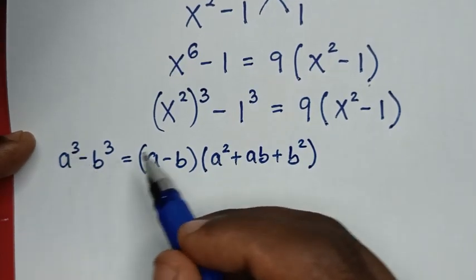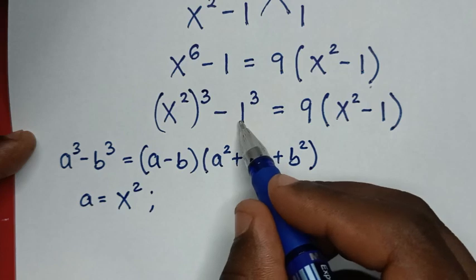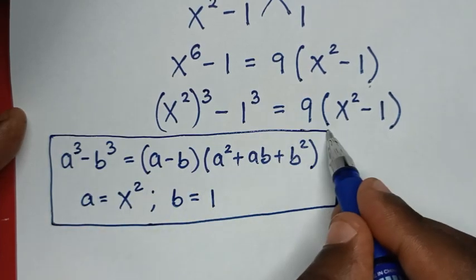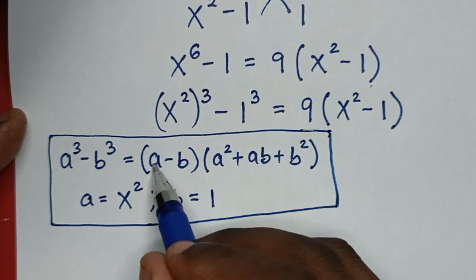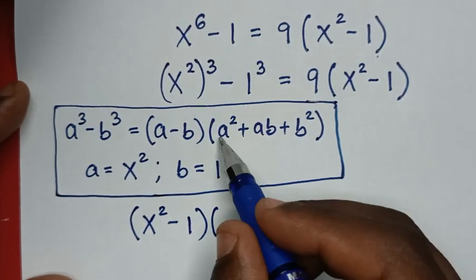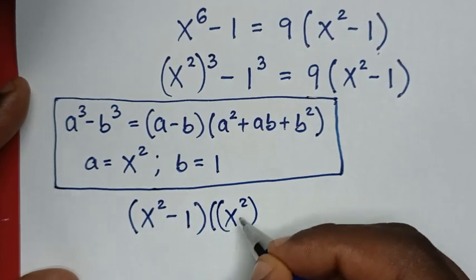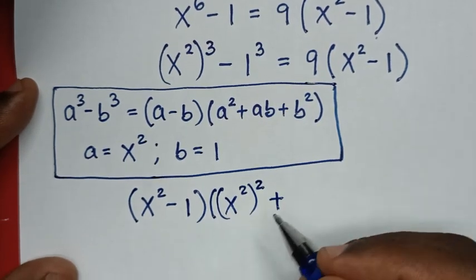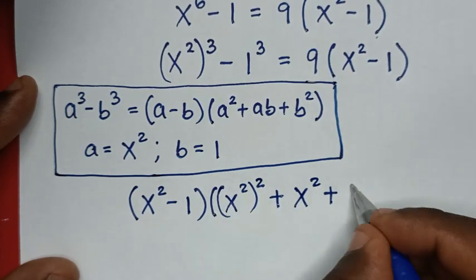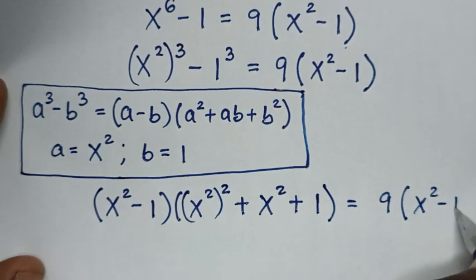So, when we compare a power of 3 with x square bracket power of 3, then a is equal to x square. And when we compare b power of 3 with 1 power of 3, then b is equal to 1. So, from this rule, into this part, we will apply this form. So, of a minus b, it will be x square minus 1. Here, x square minus 1 bracket, a square — it will be x square square. Then, plus a b — it will be plus x square times 1, it is x square. Then, plus b square — it will be 1 square, which is still 1 bracket, is equal to 9 bracket x square minus 1 bracket.